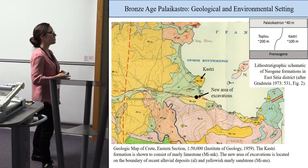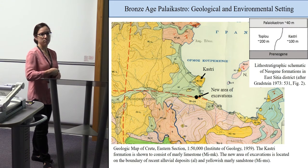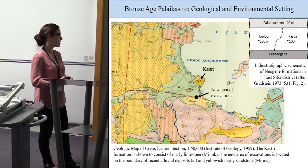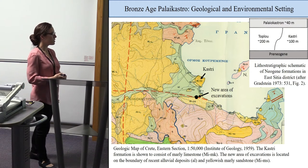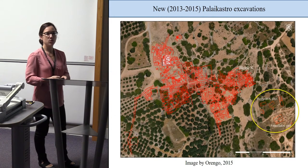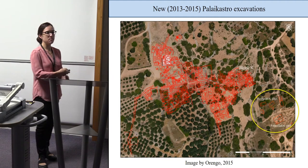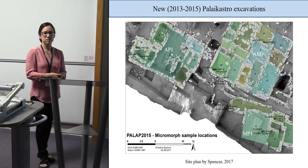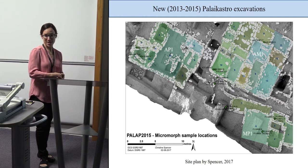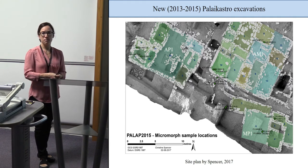The most recent geological map shows quaternary sedimentation in this basin for the Bronze Age. Neogene sources of quaternary sedimentation include the Top Blue formation and the Kastri formation, as shown in the schematic plan. The Palakastron formation overlies this, consisting of conglomerates, reef limestones, and rushes. The new area of excavations is located on the boundary of recent alluvial deposits and marly sandstone. Three different structures were found here, typologically dated to Middle Minoan 3 through Late Minoan 3 based on material culture.